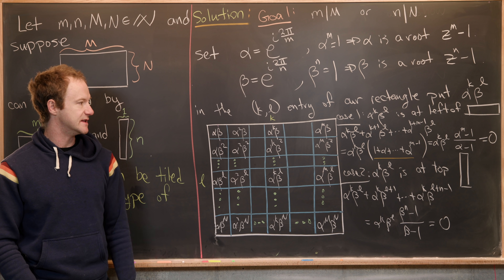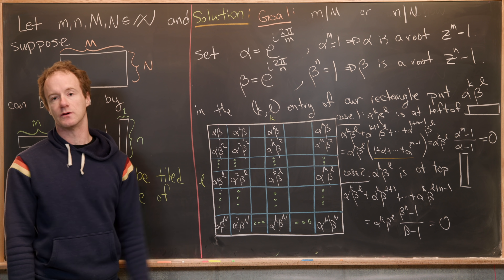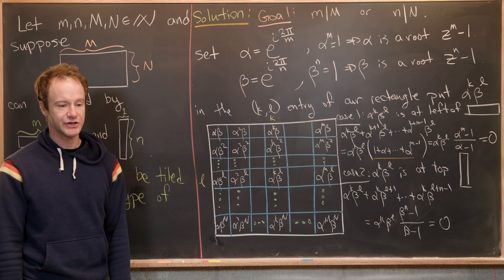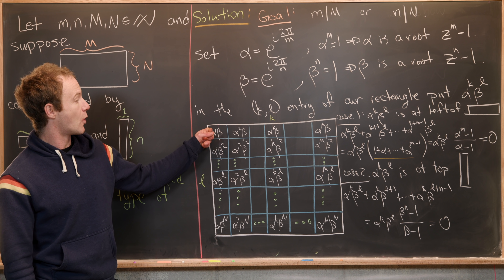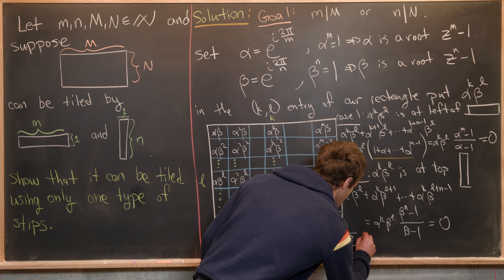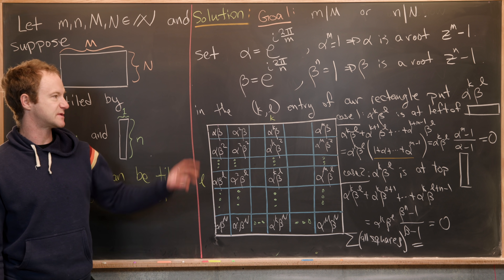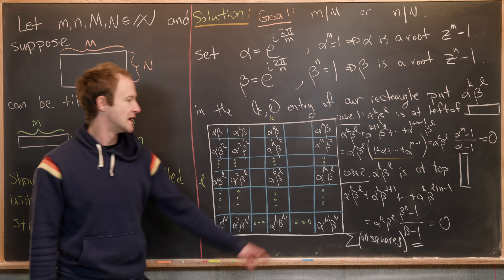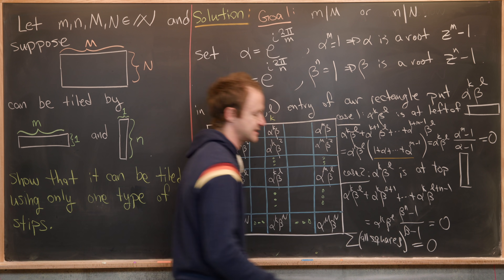Now we can think about summing over all squares in the entire rectangle. We can break that into sums over the horizontal strips and sums over the vertical strips. We showed the sum over any horizontal strip is zero, and the sum over any vertical strip is zero, so the entire sum is zero plus zero, which is zero.